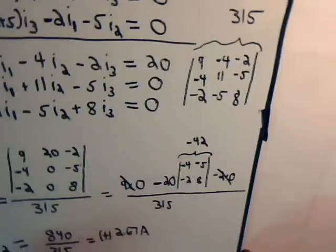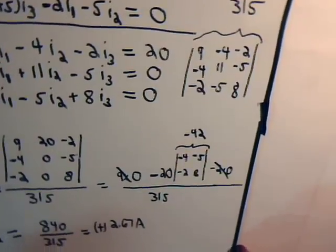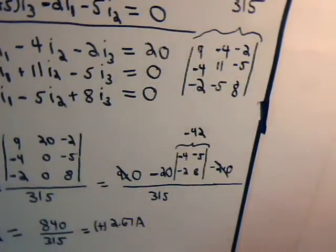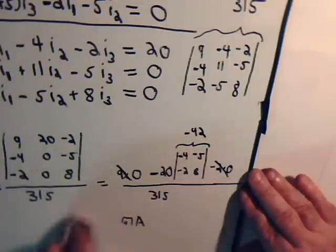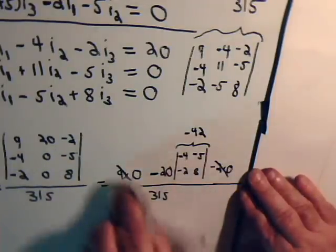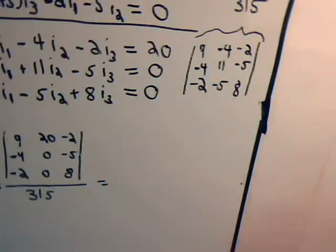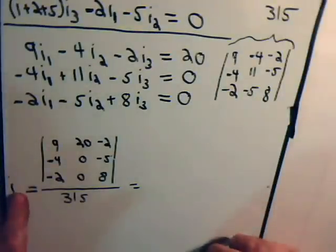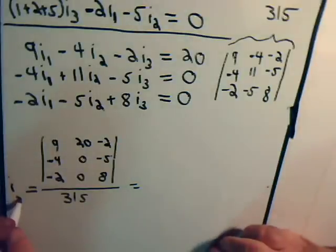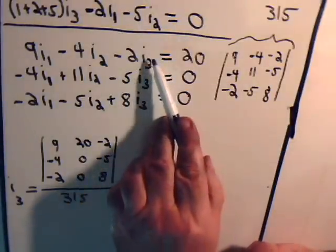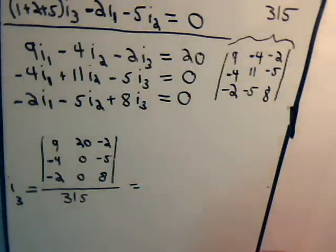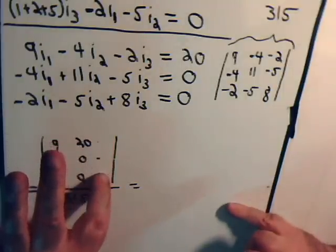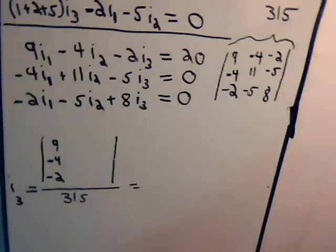Let's quickly determine I3. Now, for I3, same setup basically. Except that here, it is the I3 column that gets replaced with this. So let's do that. And I2 stays the same.